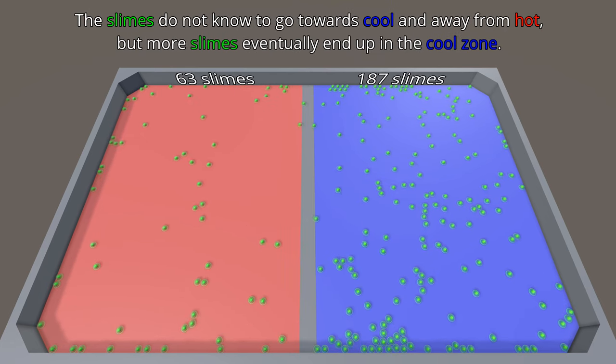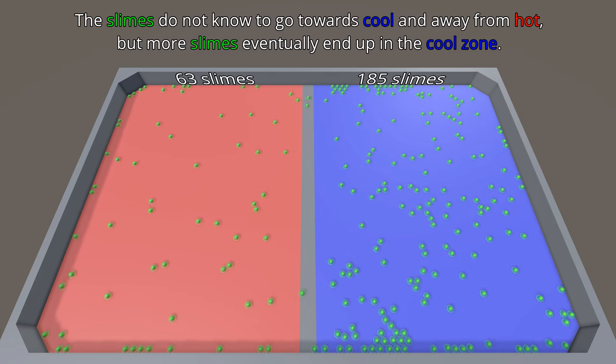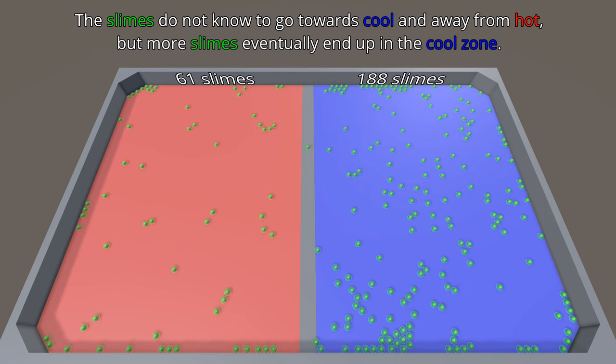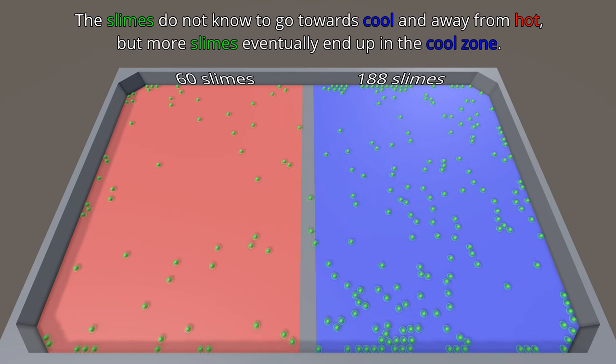So the slimes don't really know what they're doing. They don't really know where they're going. But because they can use kinesis, they will mostly end up in the cool blue zone.